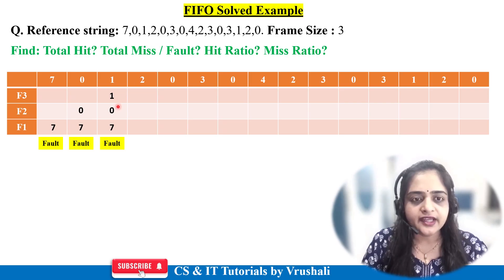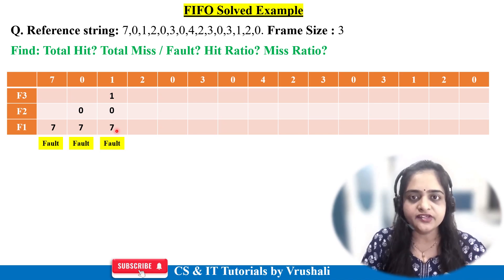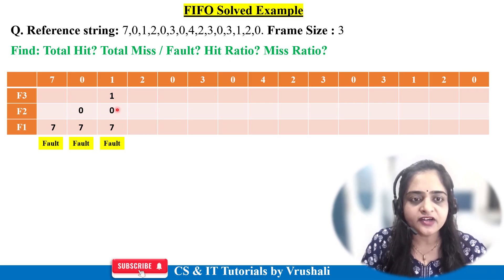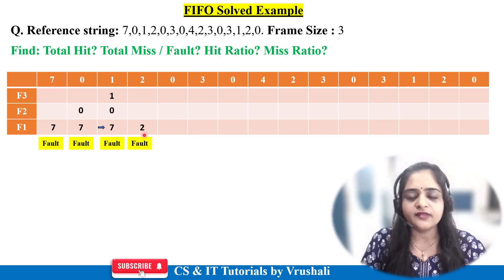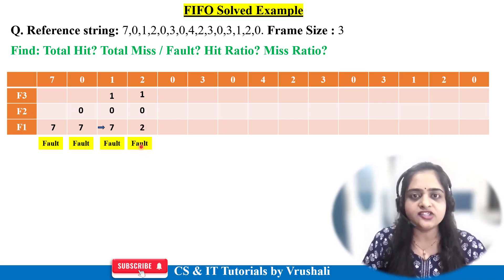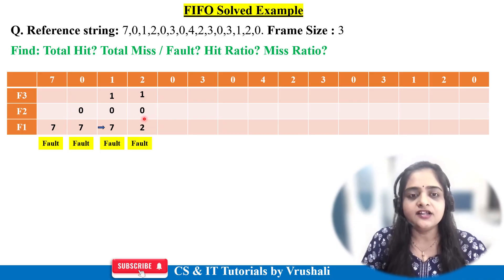Next is page 2: not present in main memory, and RAM is now full. FIFO is applied — the OS checks which page was added first: that is 7. So replace 7 with 2; page fault occurs. Next is page 0: already present in main memory — page hit. No replacement needed, data remains as is.